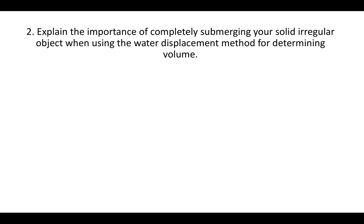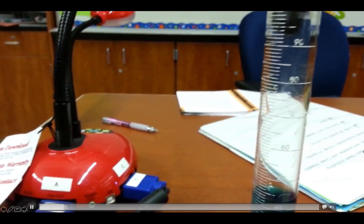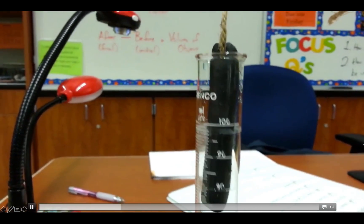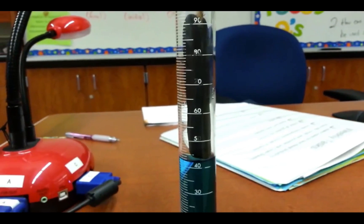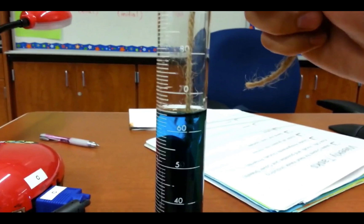If you don't put the full object underneath the water completely, then the water will only go up a part of the object and it won't give you the volume of the full object. To help you see what I mean, here's a video of someone putting an object into the water. You can see how when you continue to submerge the object, the water keeps going up. So if you want the volume of the full object, you have to submerge the whole object.